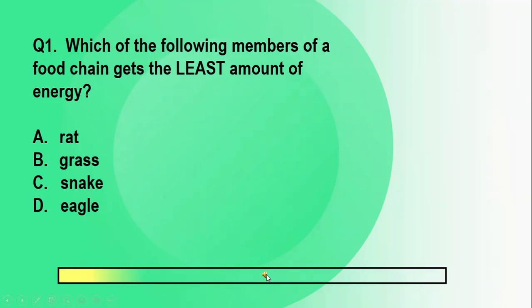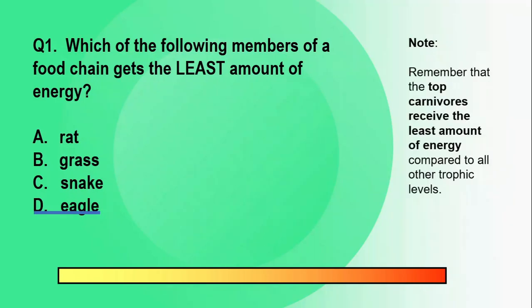You have 5 seconds. The correct answer is letter D. Remember that the top carnivores receive the least amount of energy compared to all other trophic levels. So in this illustration, we have the grass as the producer at the first trophic level. It is then eaten by the rat, which is then eaten by the snake. Then the snake is eaten by the eagle. Thus, the eagle actually receives the least amount of energy.